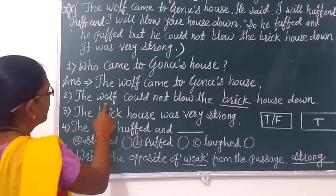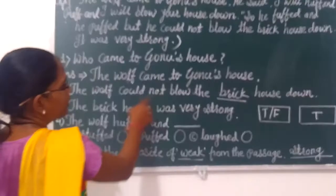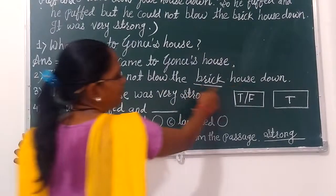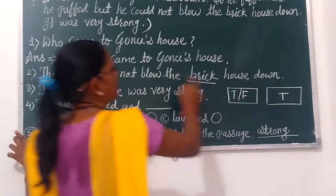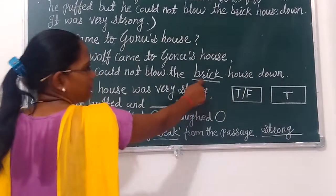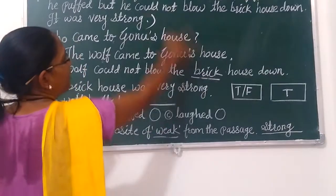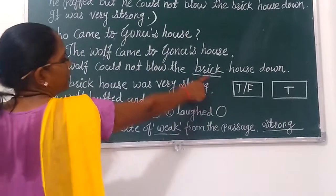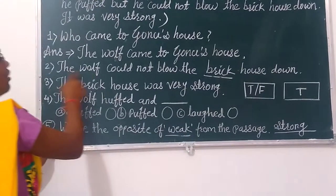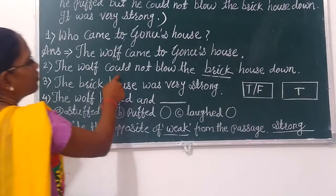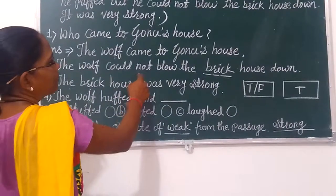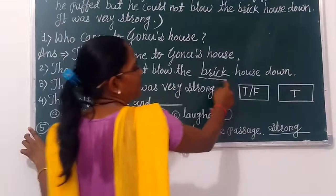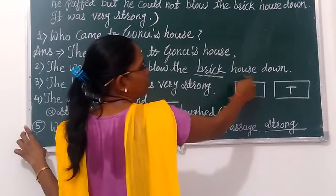Now number two: The wolf could not blow the ______ house down. You fill in the blank. Find the answer from the passage and fill in the blank.